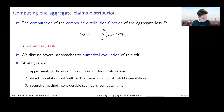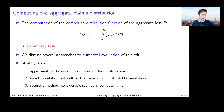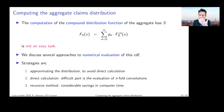Remember what the Panjer recursion was about. In the previous chapter, we said you can use it when dealing with the distribution of a compound sum, but both the primary and the secondary distribution in the compound sum construction had to be discrete distributions. That was what the whole Panjer thing was about.